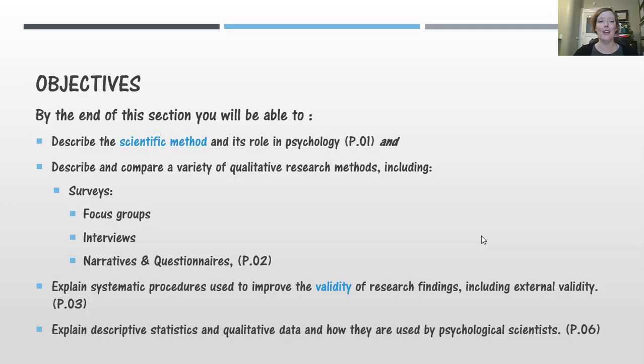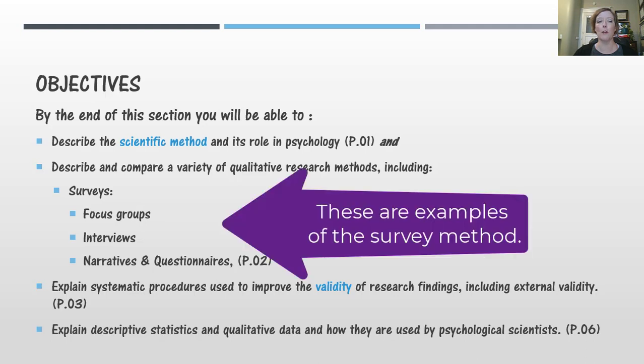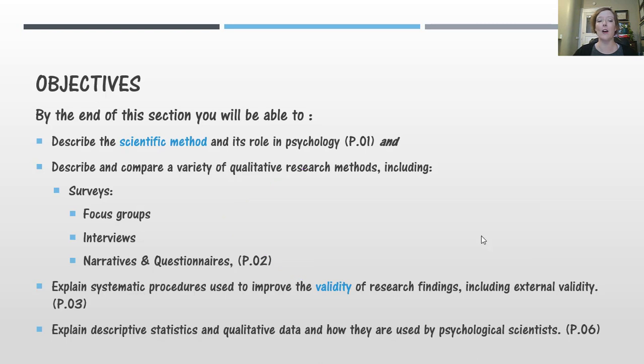What we're going to be discussing today is the scientific method. We've talked a little bit about it before, how it came to be. But we're going to actually describe it and take a look at it. And we're going to look at a variety of qualitative research methods, including surveys. We're also going to talk about focus groups, interviews, narratives, and questionnaires. We're going to look at how procedures can be used to improve the validity or what we're actually studying in research findings. And we're also going to talk about this idea of descriptive statistics and qualitative data and how psychological scientists use both.